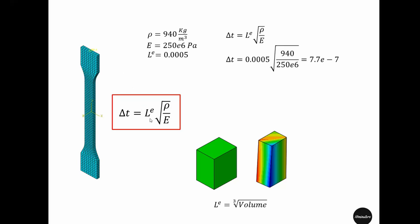If the characteristic length increases from 0.0005 to 0.005 — a 10 times increase — the stable time increment delta-t would become 10 times larger, 7.7e-6, and that would mean the simulation runs 10 times faster.